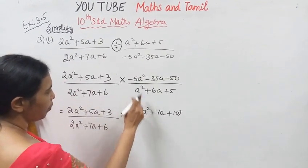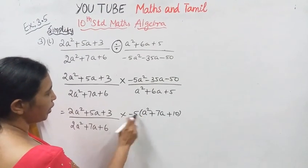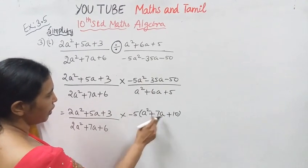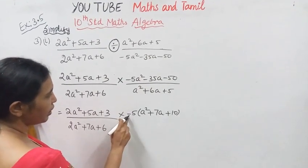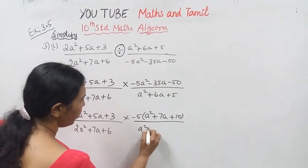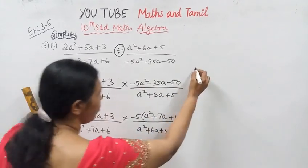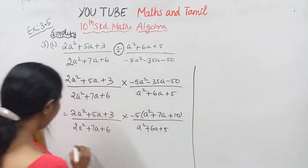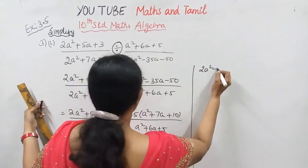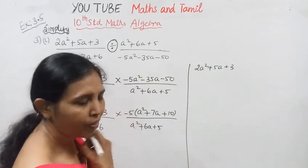Then minus 5 is common. Minus into plus gives minus. So we get plus 35a. A squared plus 6a plus 5. So 2a squared plus 5a plus 3 has factors — 2a squared plus 5a plus 3.